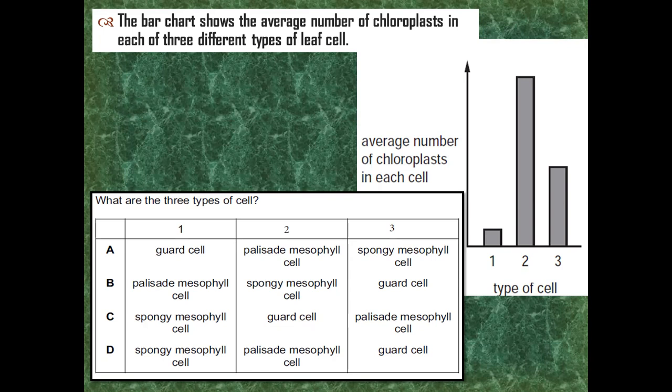So the highest number of chloroplasts are present in palisade mesophyll. And then we have the lower number in the spongy mesophyll, which is present below the palisade mesophyll. And lower, we have guard cells, which has the lowest number of chloroplasts. So here, we have A as our answer. One is the guard cell, number two are palisade mesophyll, and number three is spongy mesophyll.